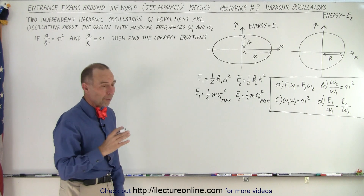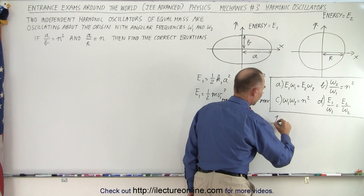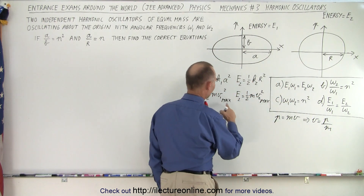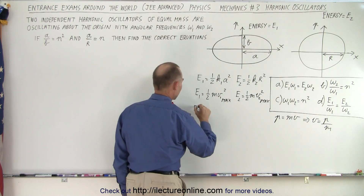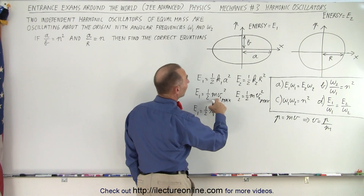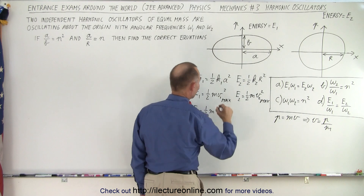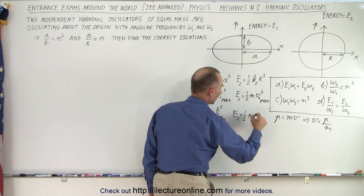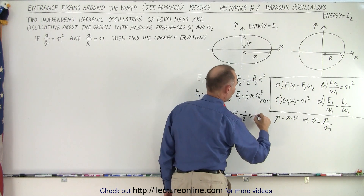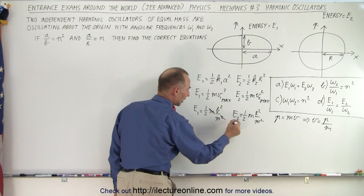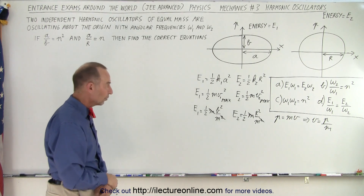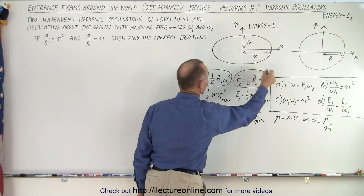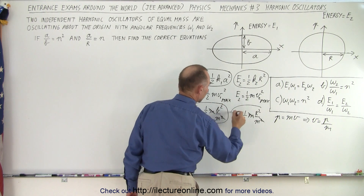Since they gave us momentum rather than velocity, we use the relationship p = mv, so v = p/m. Substituting, E1 becomes ½m·(b/m)² which simplifies to b²/(2m), and E2 becomes r²/(2m), since m cancels in each case. These give us the maximum kinetic energies of the first and second systems respectively.